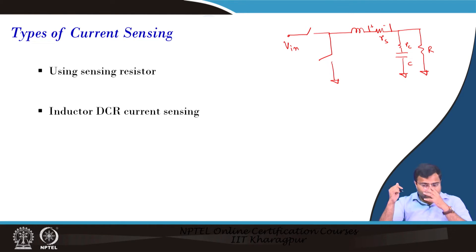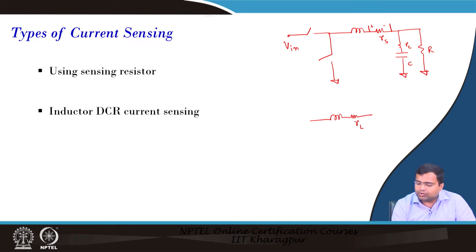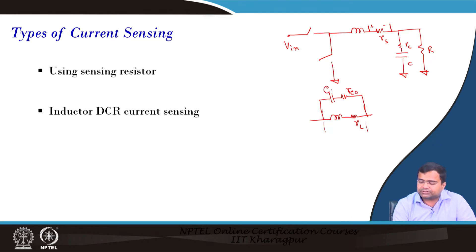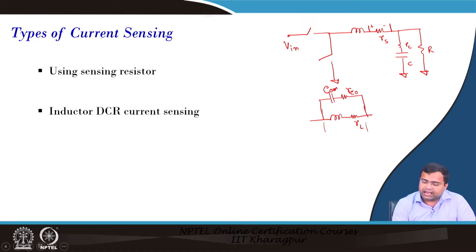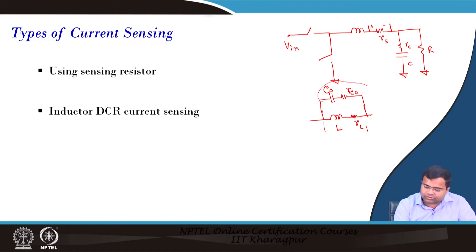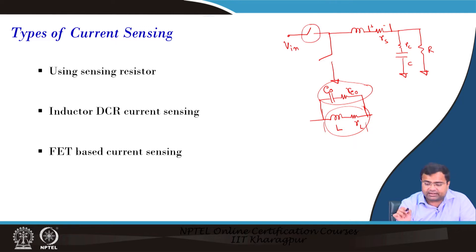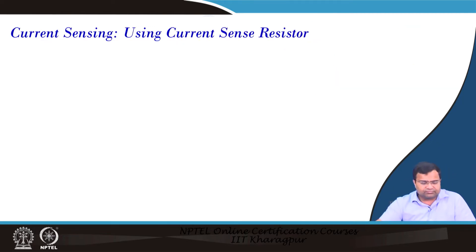Another technique is inductor DCR current sensing. An inductor has its own DC resistance (RL) which is part of the inductor itself. By placing an external capacitor and resistance as a compensating network in parallel, we want to match the time constant of this network with the inductor's RL. We can also sense the current through the FET — either the high-side or low-side switch.